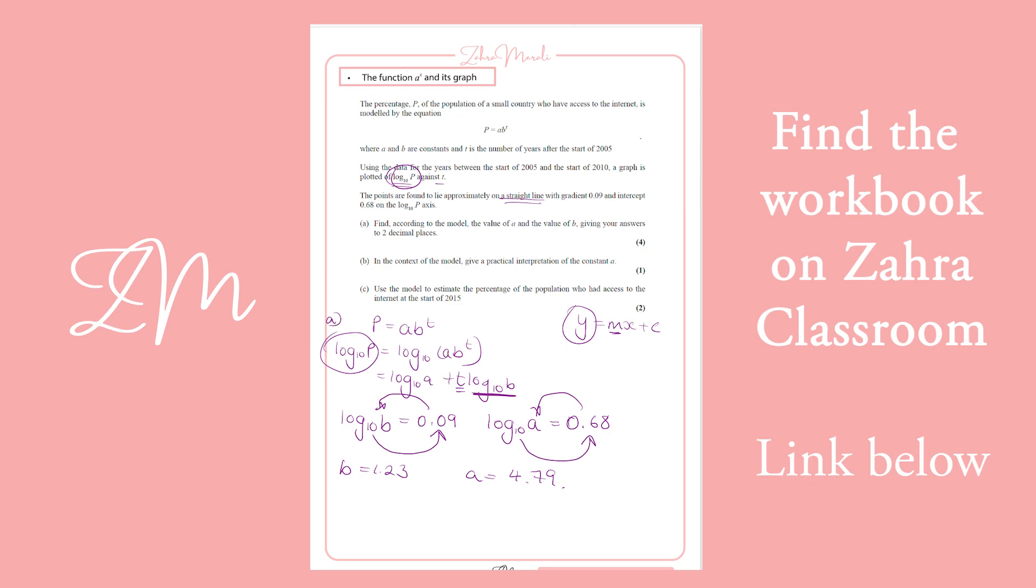Okay, so the next bit asked in context of the model. Now, the model is about a population who have access to the internet. So the constant happens when T is 0, because B to the 0 equals 1. So when T is 0, the population equals that A. So what does that mean?